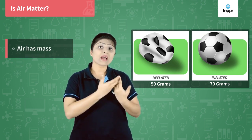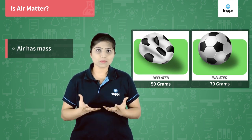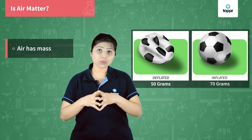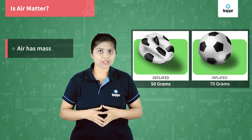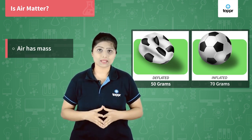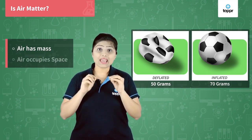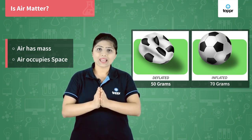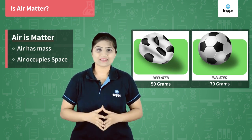One more thing. If I have to keep this deflated football in my bag, is that possible? Yes, it will occupy less space. But if I have to keep this blown football in my bag, is that possible? Well, it will be difficult because it will occupy more space. That is because of the air present inside — the air has occupied space in the football. So, I can say air is matter because it occupies space and has mass.